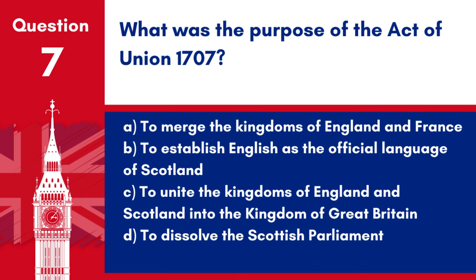Question 7: What was the purpose of the Act of Union 1707? a. To merge the kingdoms of England and France. b. To establish English as the official language of Scotland. c. To unite the kingdoms of England and Scotland into the Kingdom of Great Britain. d. To dissolve the Scottish Parliament. Answer: c. To unite the kingdoms of England and Scotland into the Kingdom of Great Britain. The Act of Union 1707 was a pivotal agreement that brought about the political union of England and Scotland under the name of Great Britain.